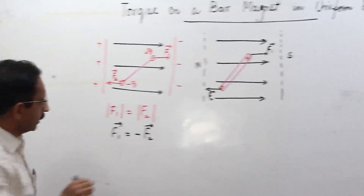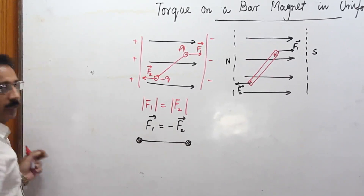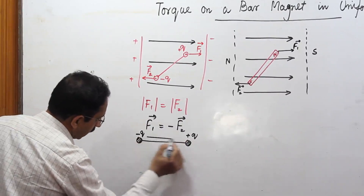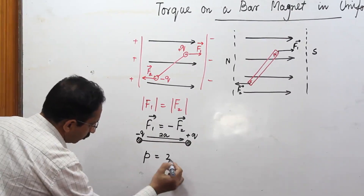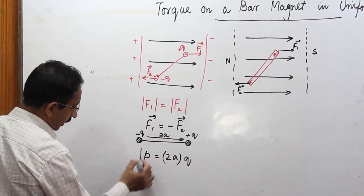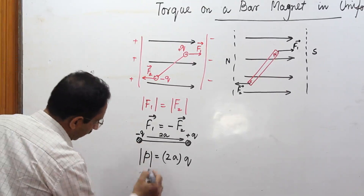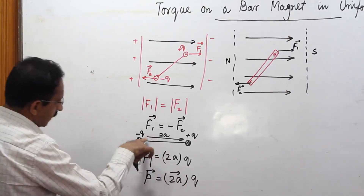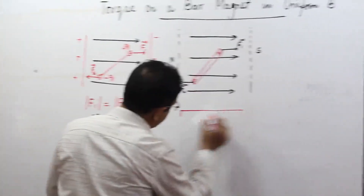For an electric dipole we define a quantity called the electric dipole moment, directed from the negative charge towards the positive charge. If the distance between the two charges is 2a, then the electric dipole moment p equals 2a multiplied by q. Its direction is from the negative charge towards the positive charge.